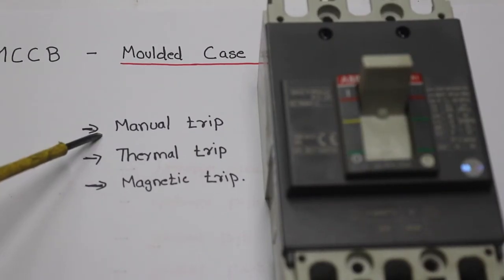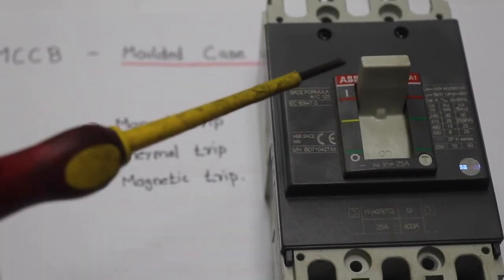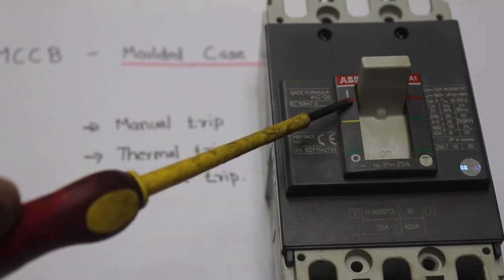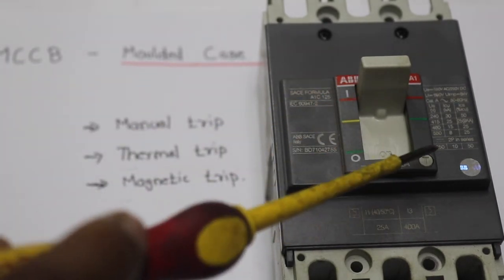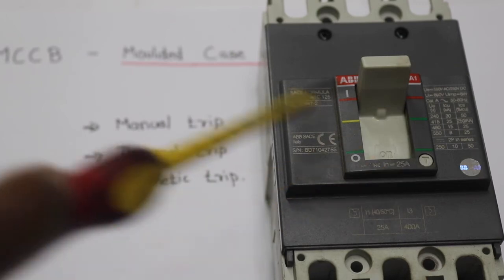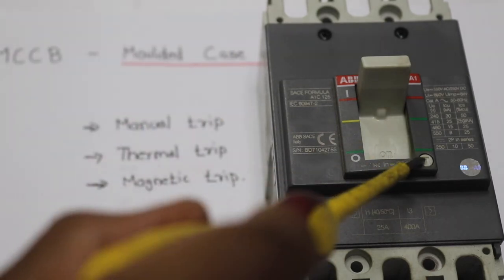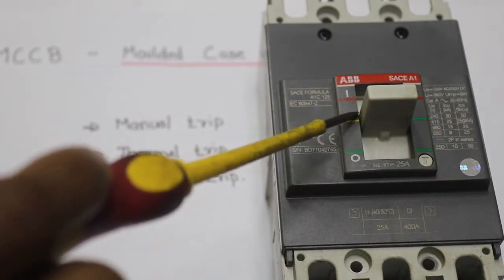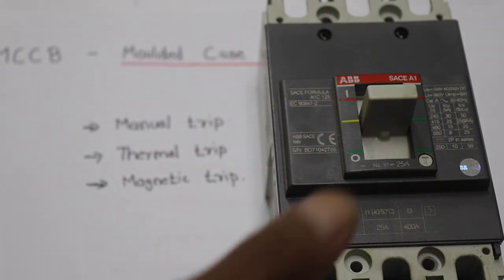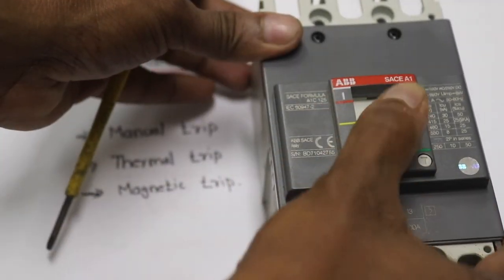This is the manual trip. This is the on position. This is a T push button for manual trip. When you press this push button, it moves to the trip position and the control plane opens the circuit.